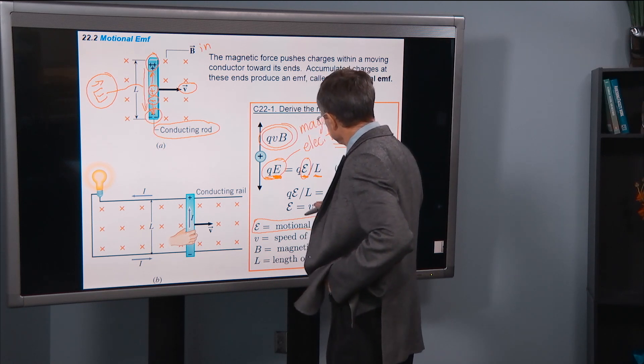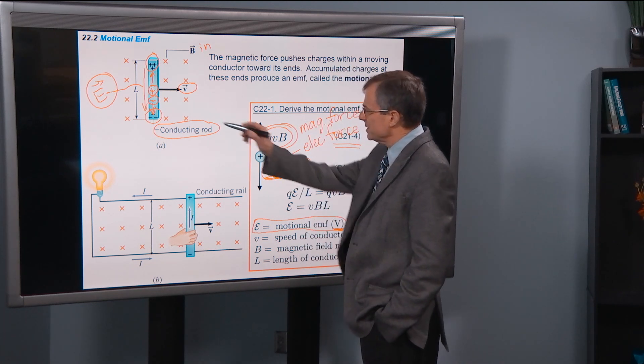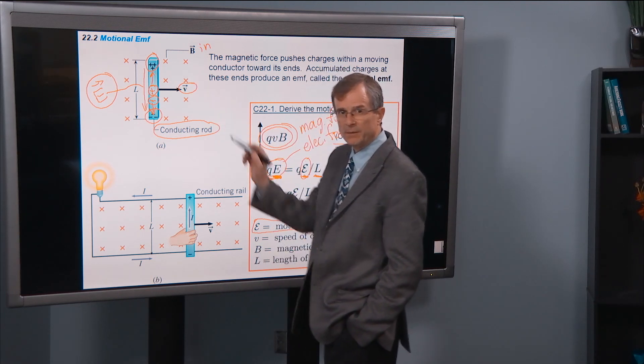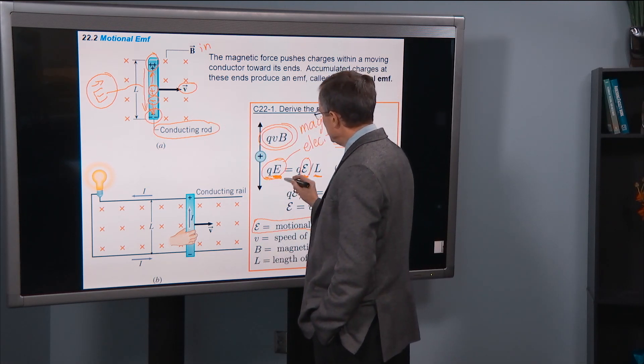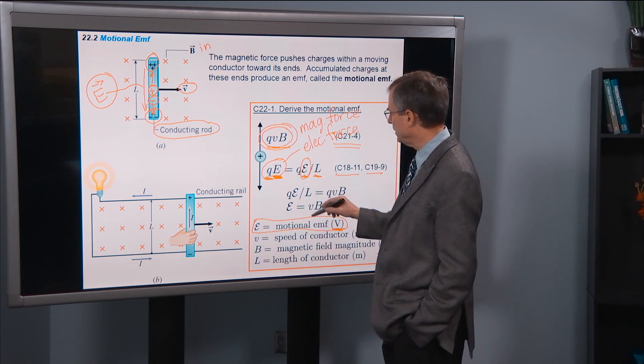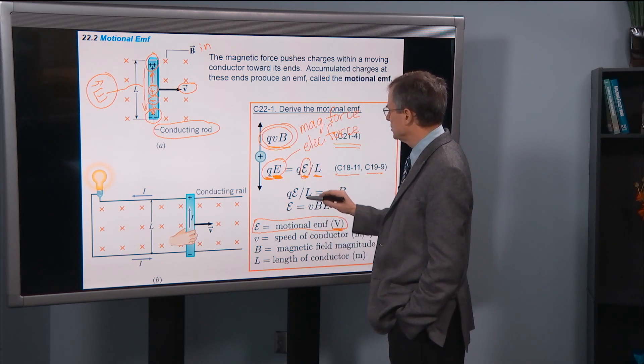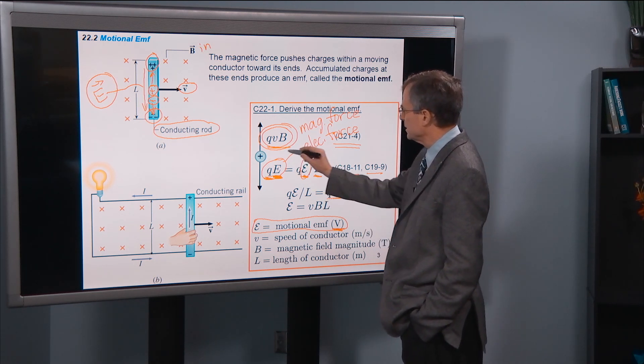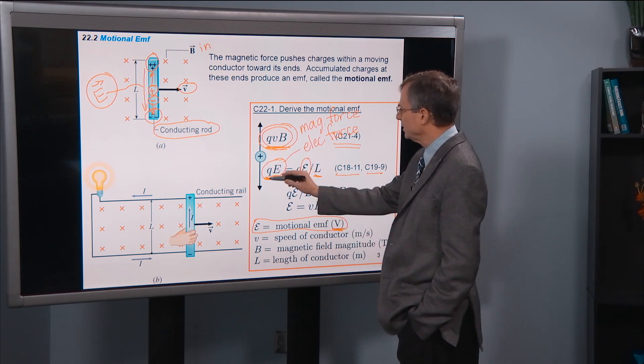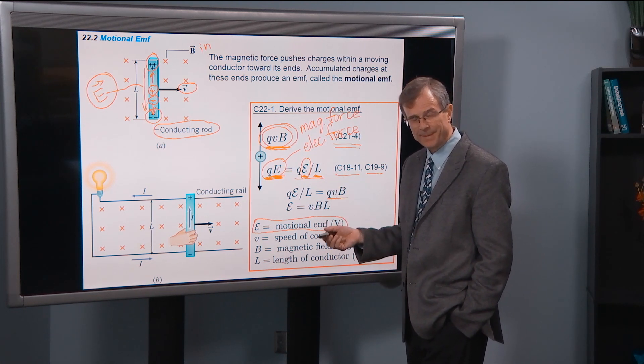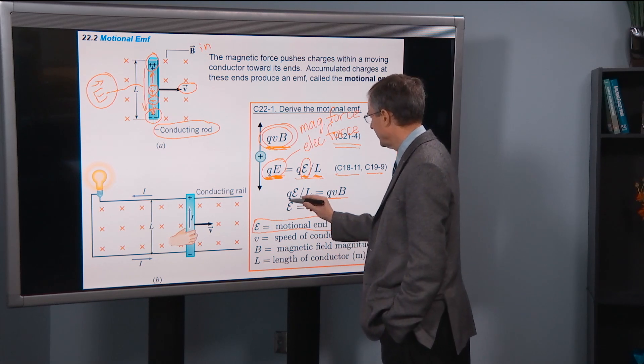And so if this is an equilibrium, if it's traveling at a constant speed v, then these two forces will balance each other out. And we can set them equal to each other. So I'm going to set qvB, that's this piece right here, equal to qE. But I've already rewritten qE as script E over L.